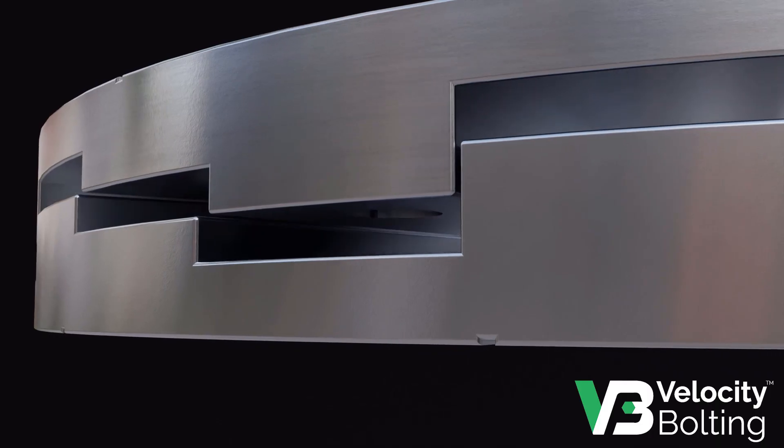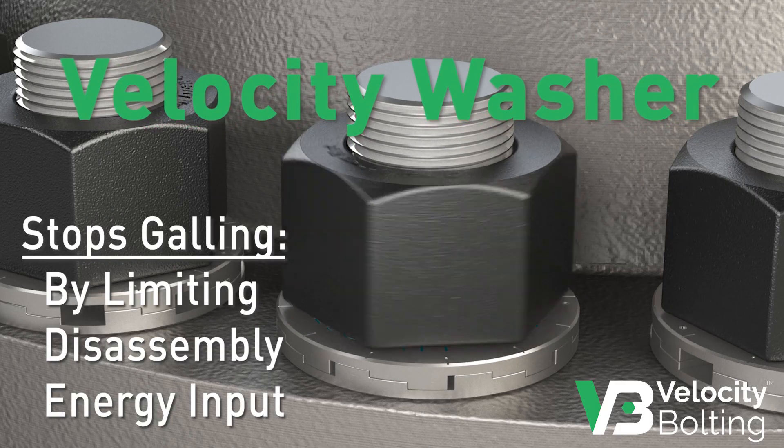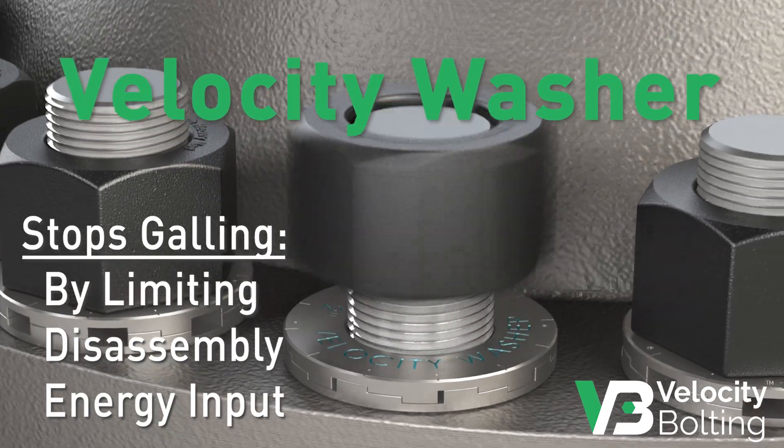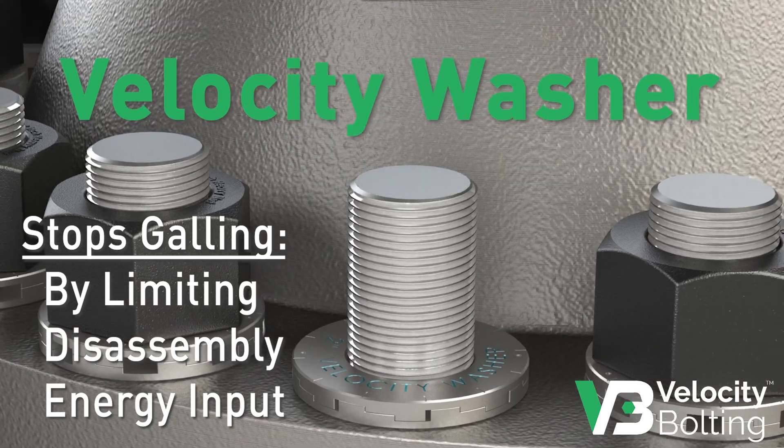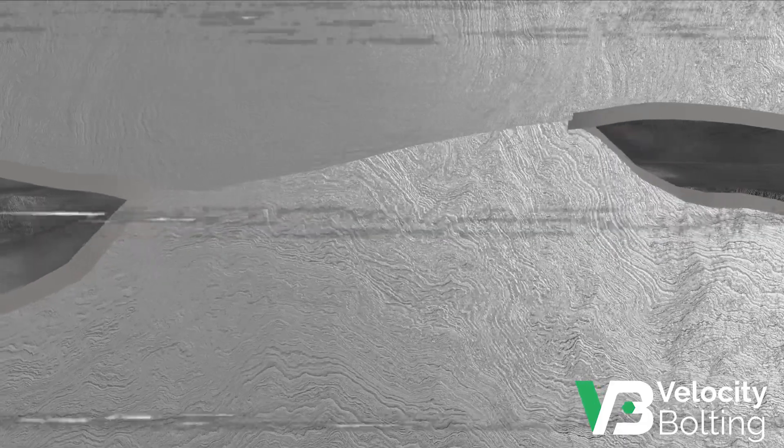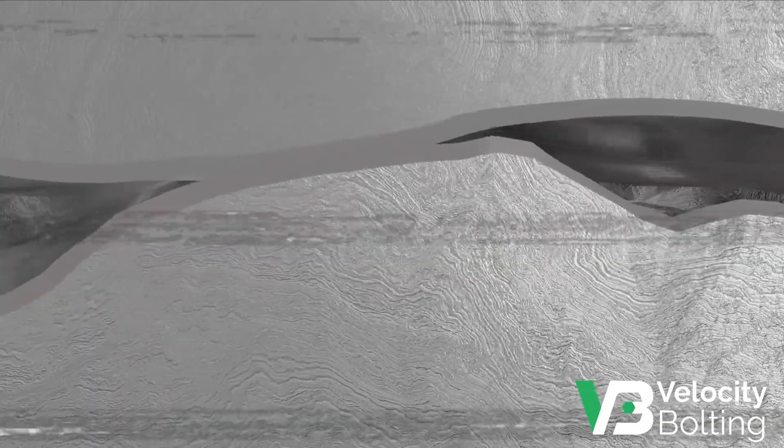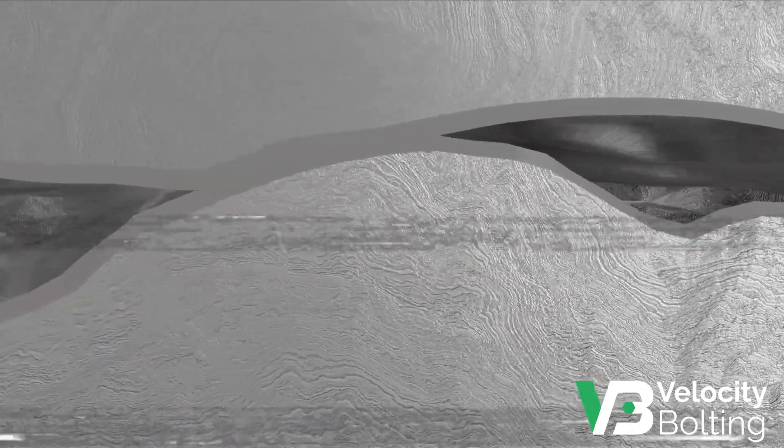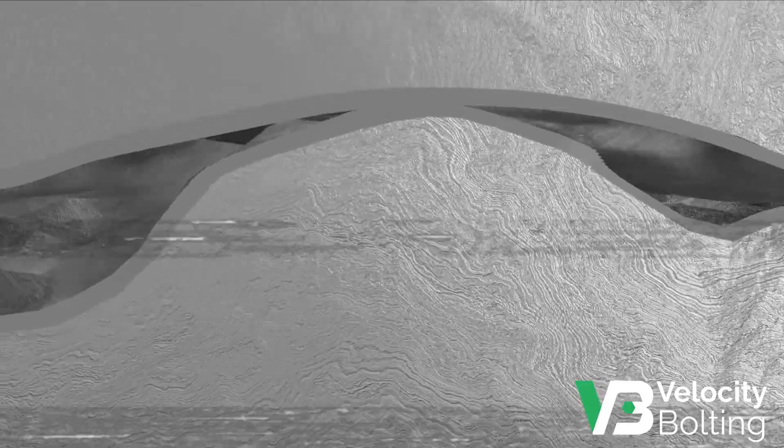With only 12 degrees of rotation, the velocity washer simply stops the galling process from advancing past the initial stages by limiting the energy input. So, deformation is minimized, oxide layers remain intact, lumps don't form, and heat and energy don't build up enough to form bonds.